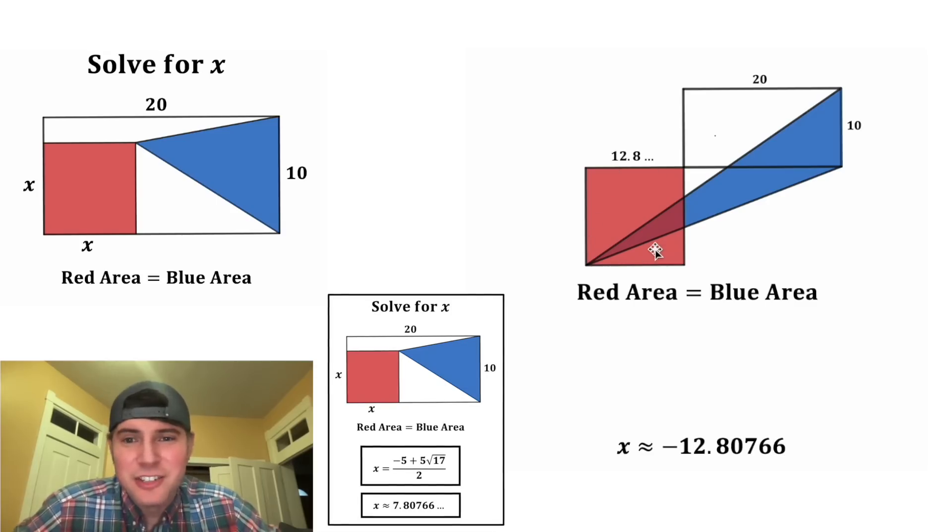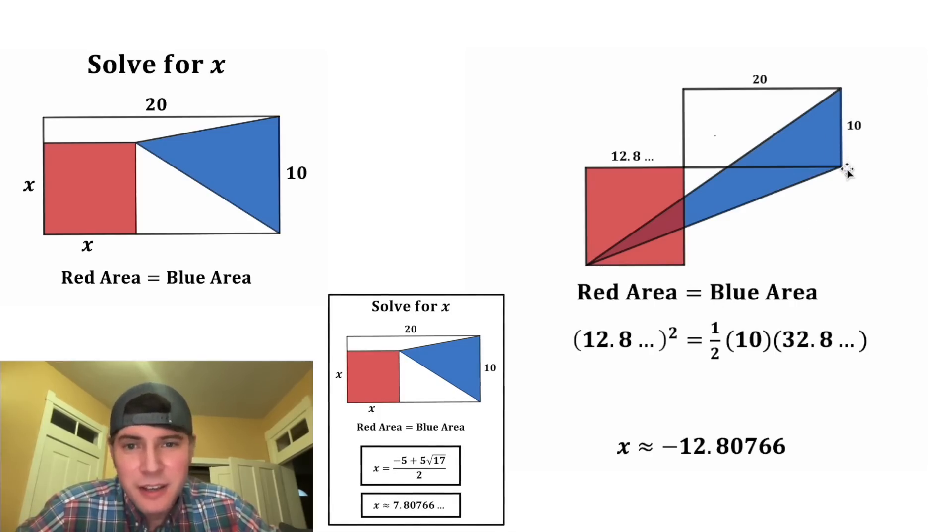This red area would be equal to that 12.8 number squared. And the blue area would be equal to one half this base of 10 times this height of 32.8.